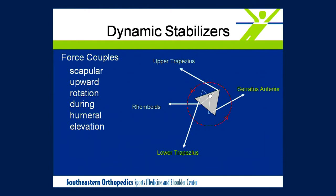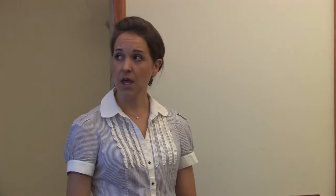The muscles that control and stabilize the scapula act in a force couple — analogous to a revolving door. The scapula rotates around a pivot point, and the muscles of the upper trapezius and the rhomboids act to counteract the force of the serratus and the lower trapezius. The serratus anterior is our main protractor of the scapula, as shown through EMG studies where the serratus is highly active with protraction. It's important as an upward rotator coupled with the trapezius, and it provides stabilization, preventing winging of the medial border and prominence of the inferior angle.